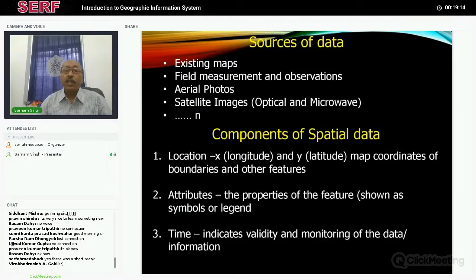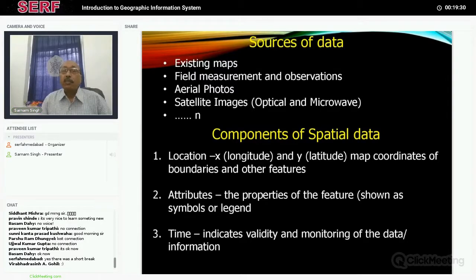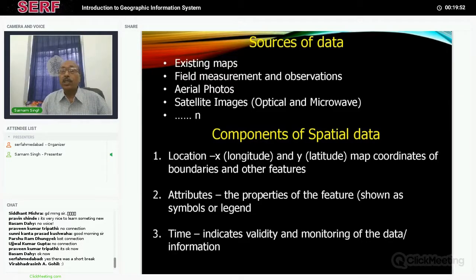Where do you collect data? First, get existing maps from each country's survey department at the required scale — one to ten thousand or one to fifty thousand, depending on your requirement. Then go to the field depending on the objective to take field measurements and create a database of observations. You can also use aerial photos and satellite images. The maps produced from satellite data, discussed yesterday, can be imported into GIS for further analysis.